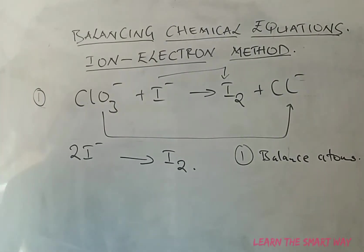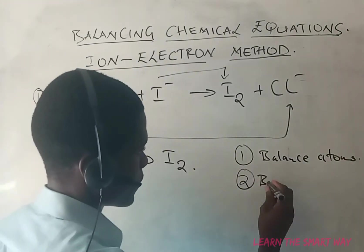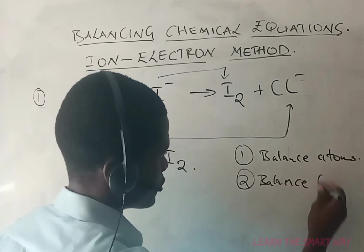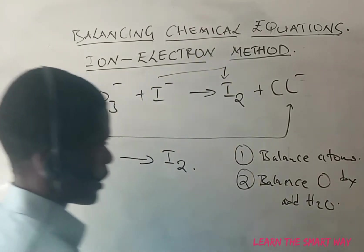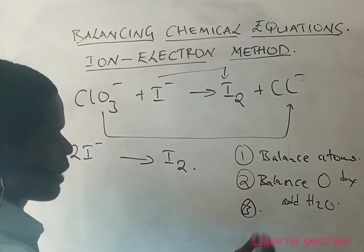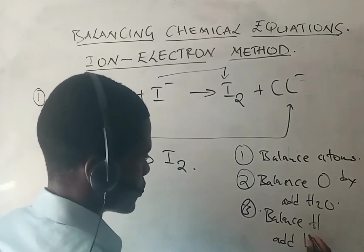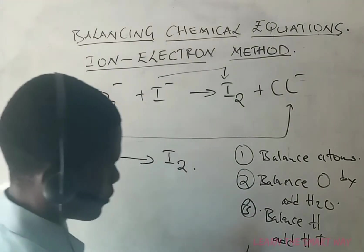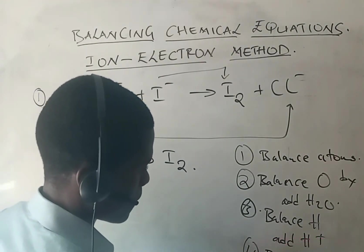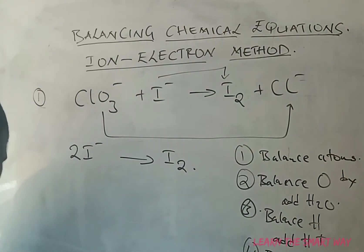Once atoms are balanced, the second step is to balance oxygen — you balance oxygen by adding water molecules. The third step is to balance hydrogen — you balance hydrogen by adding hydrogen ions. The fourth step is to balance charges by identifying how many electrons were lost and gained in both half-reactions.